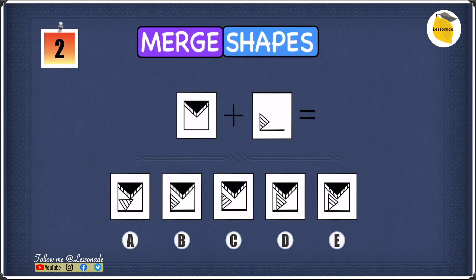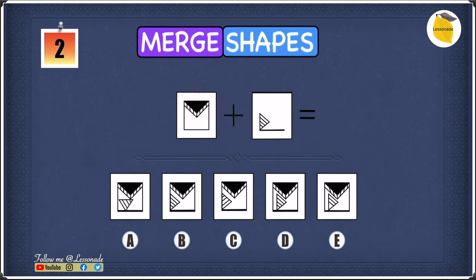Now let's have a look at this example. We have two shapes. In shape 1 we have a square on the outside and then a triangle on the inside that has been shaded in black, and on top of this triangle there is a stripy pattern. In shape 2 we have a horizontal line, and on top of this horizontal line there's a triangle attached to this line with a hatched pattern.